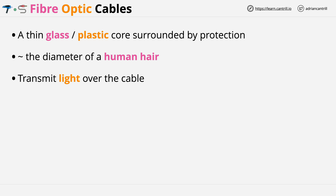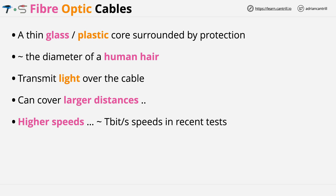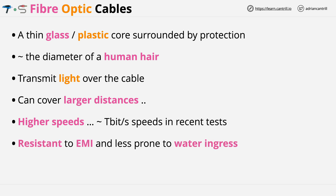These unique elements mean that the cable can cover much larger distances and achieve much higher speeds versus copper. At the time of creating this lesson, this can be in the regions of terabits per second. Now fibre is also resistant to electromagnetic interference known as EMI, and it's less prone to being impacted by water ingress into a space where the cables are being used.